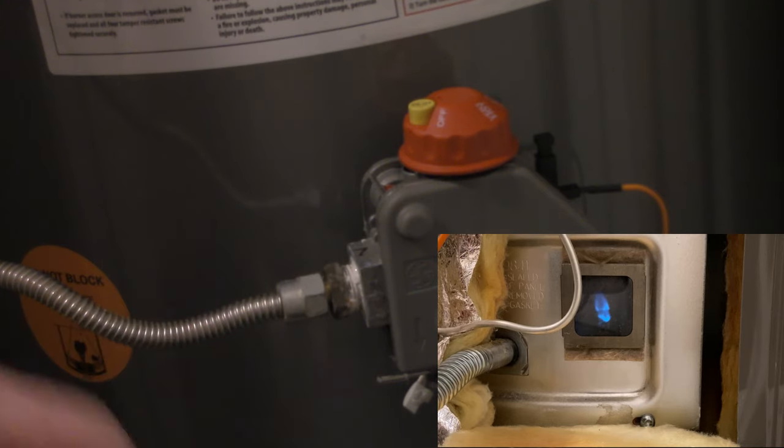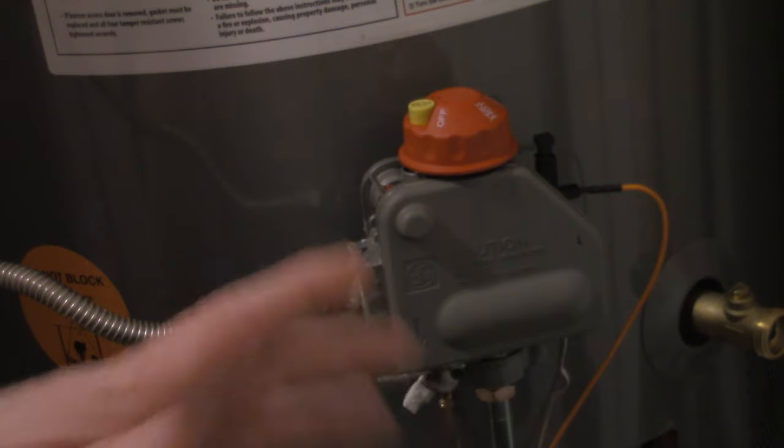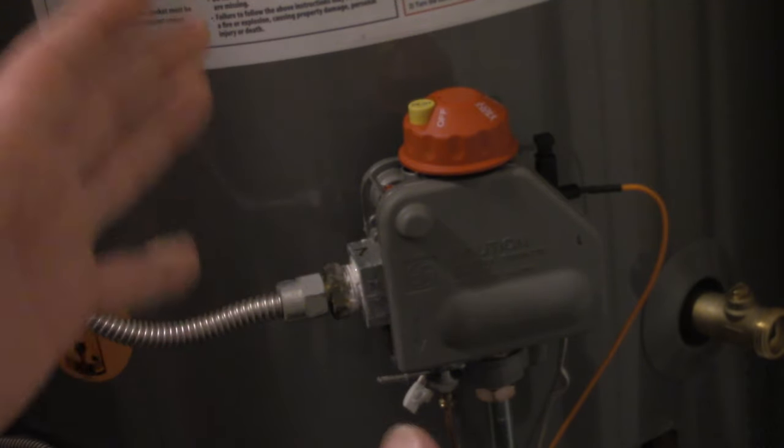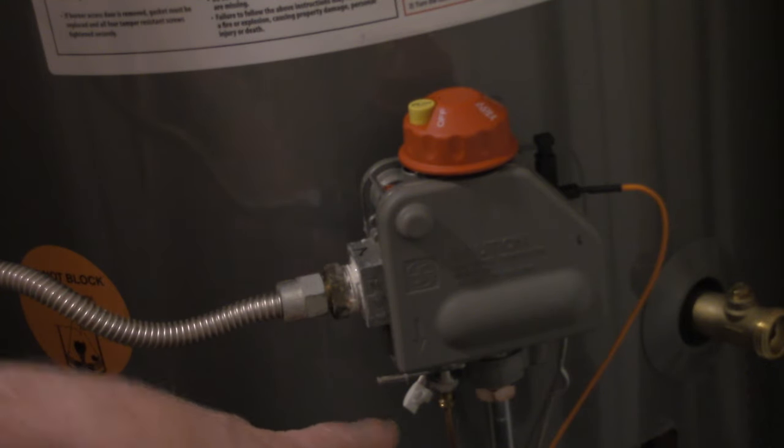Now at this point if you have done these steps and your pilot light works now, the problem is that emergency cutout switch. That's all that it could be because your thermocouple is working here just as it's designed. That emergency cutout is bad.